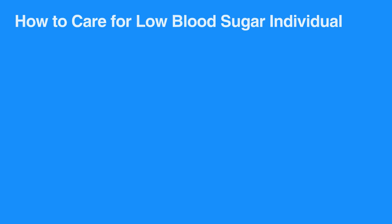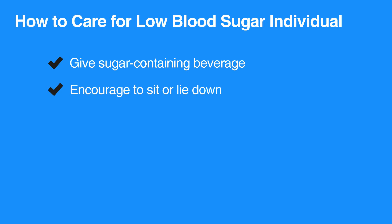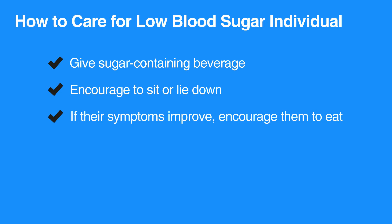To care for an individual who has low blood sugar, give them a sugar-containing beverage such as fruit juice, milk, or a soft drink. Encourage them to sit or lie down. If their symptoms improve, encourage them to eat. Also be sure to call 911.